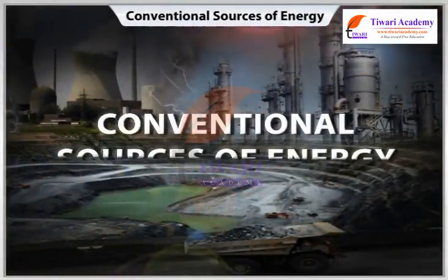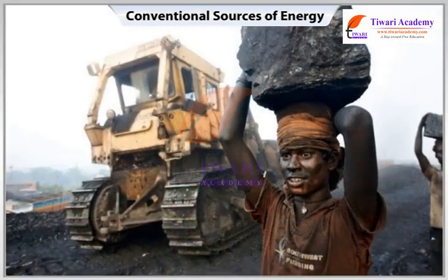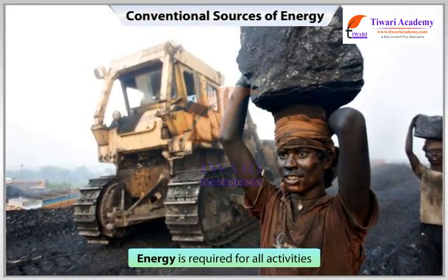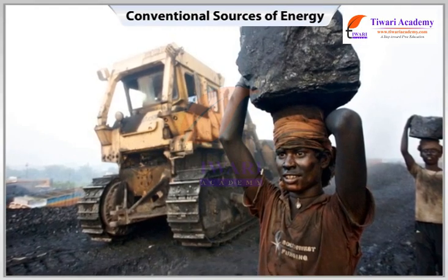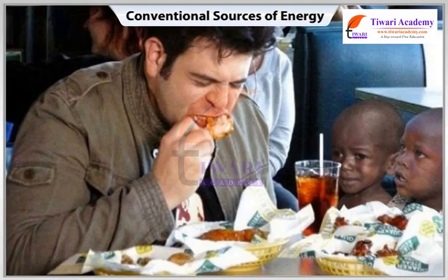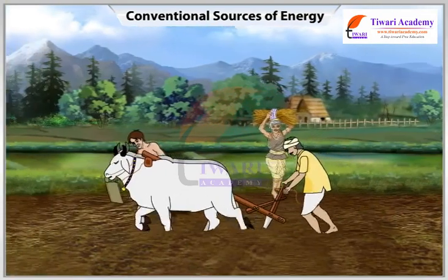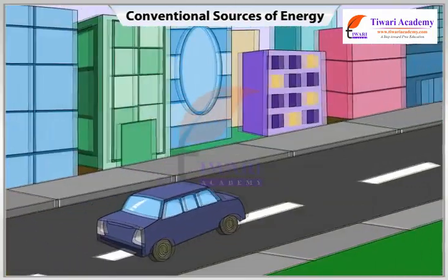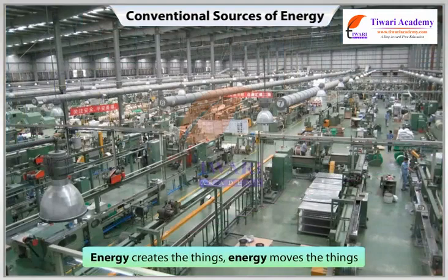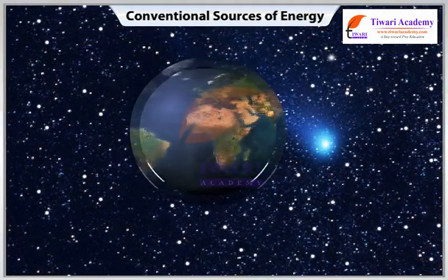Conventional sources of energy: energy is required for all activities, whether performed by living beings or non-living things. Chemical energy is stored in the food we eat and gives us energy to do work. Cars run on the chemical energy stored in petrol. Energy creates things, energy moves things — this universe is simply a playground of energy.